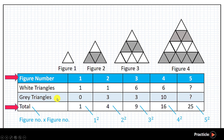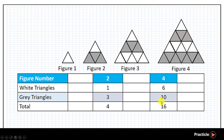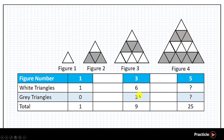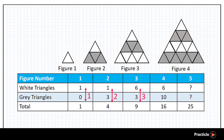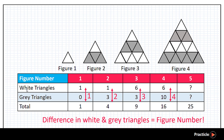Now what about the white triangles and the grey triangles? Let's try to see what the difference between them is. The number of grey triangles is always more than the number of white triangles in the even figures, and the number of white triangles is always more than the grey triangles in the odd figures. When we subtract the smaller number from the bigger number, it appears that the difference in the number of white and grey triangles is the same as the figure number. So as long as we have the figure number, we'll always be able to find the difference between white and grey triangles.